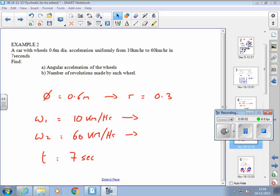So, we're told diameter, which means we find the radius, we're told omega 1 and omega 2, and we're told the time.